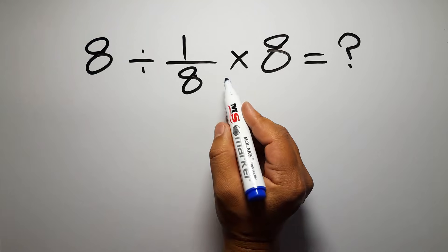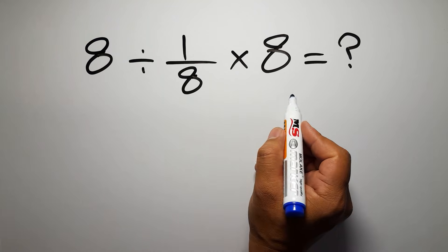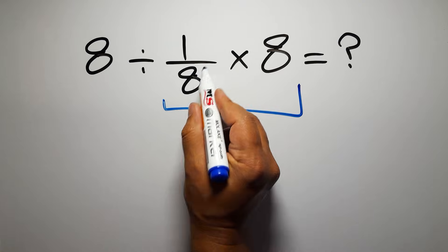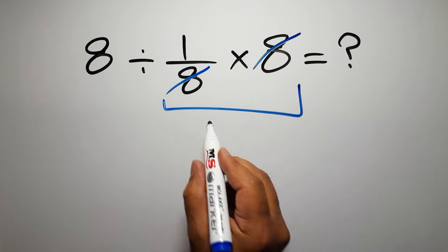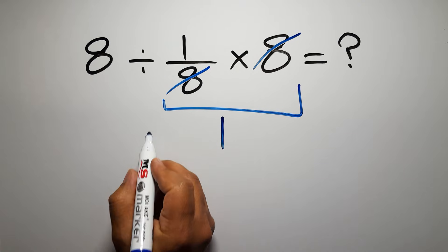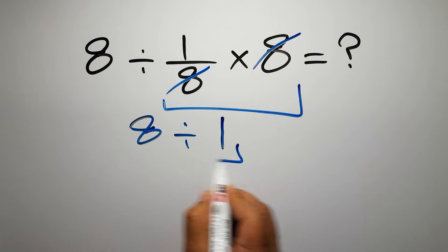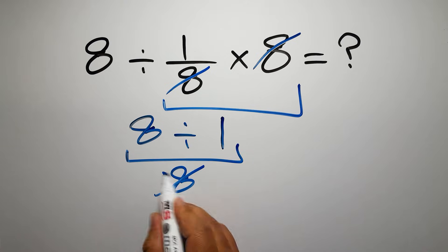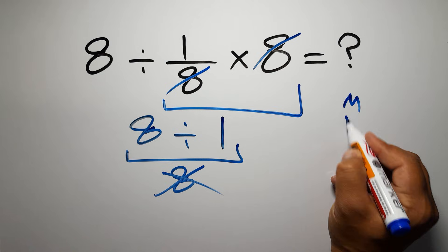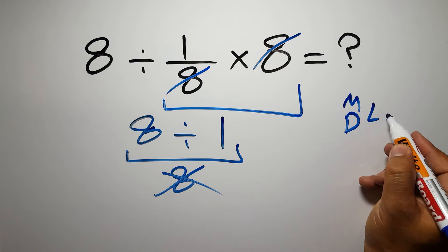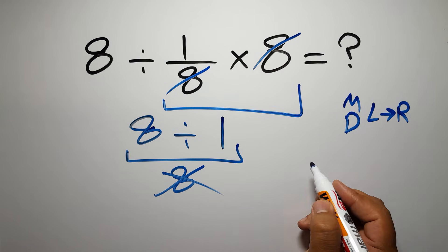First we do this multiplication, 1 over 8 times 8. We can easily cancel this 8 and this 8, so we have just 1, and 8 divided by 1 equals 8. But this answer is not correct because according to the order of operations, multiplication and division have equal priority and we have to work from left to right.